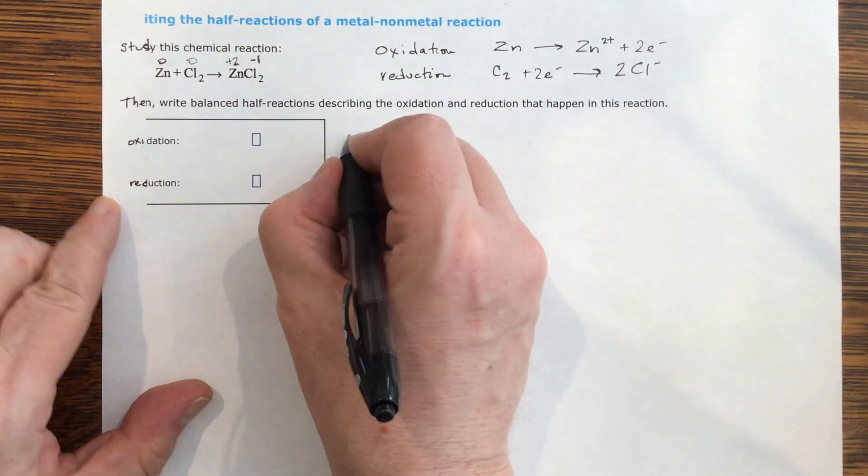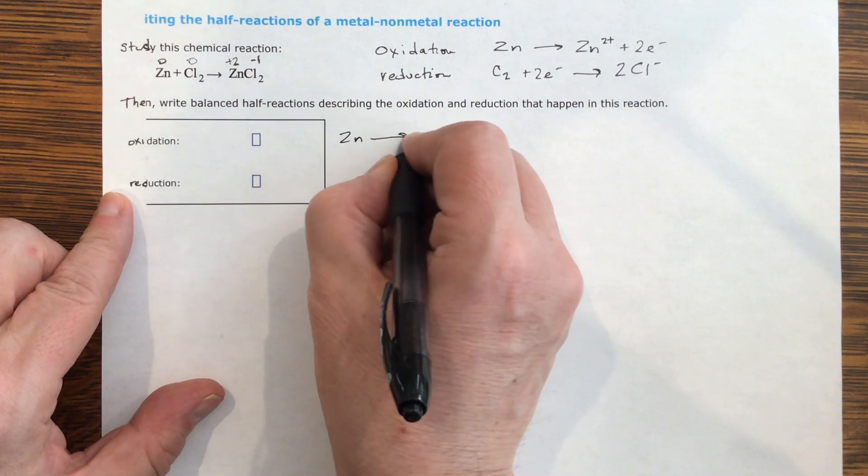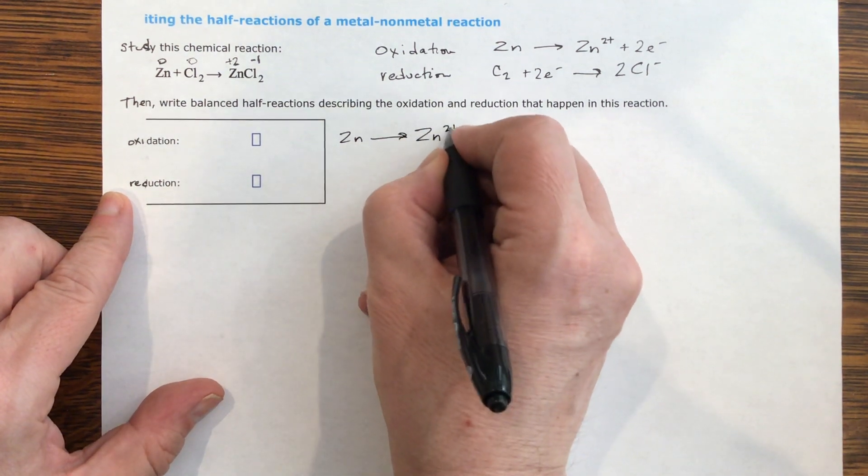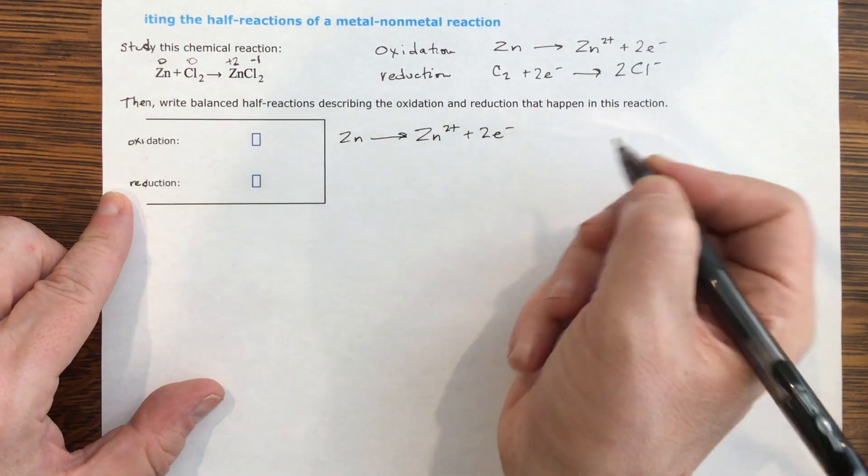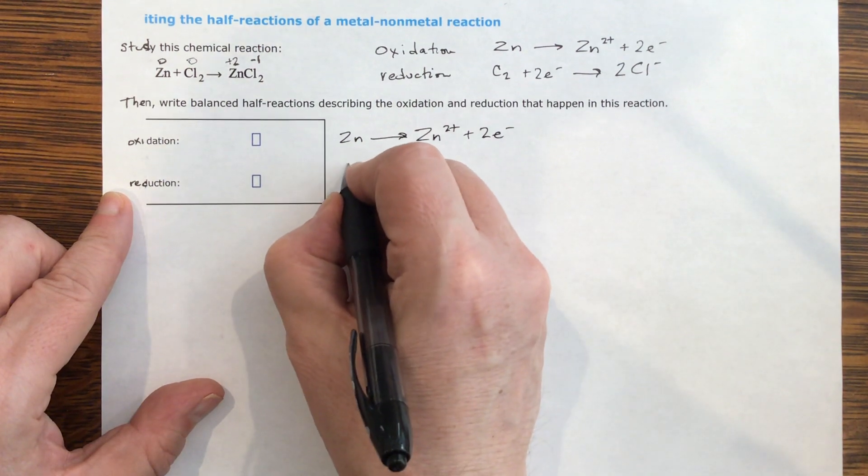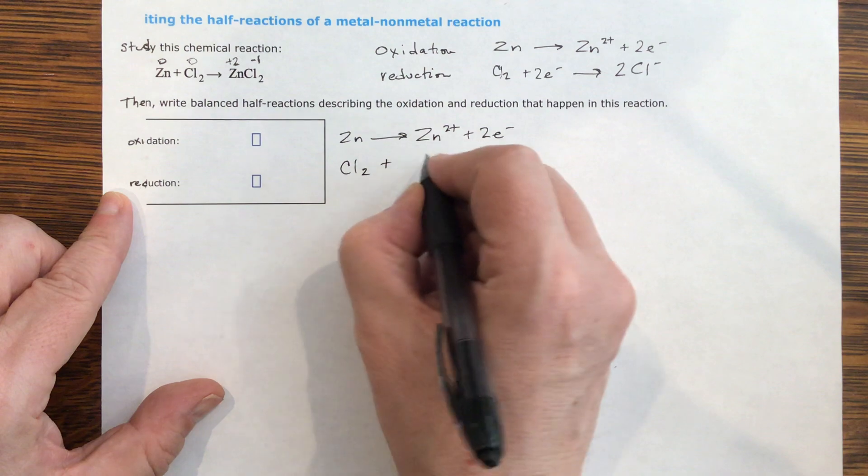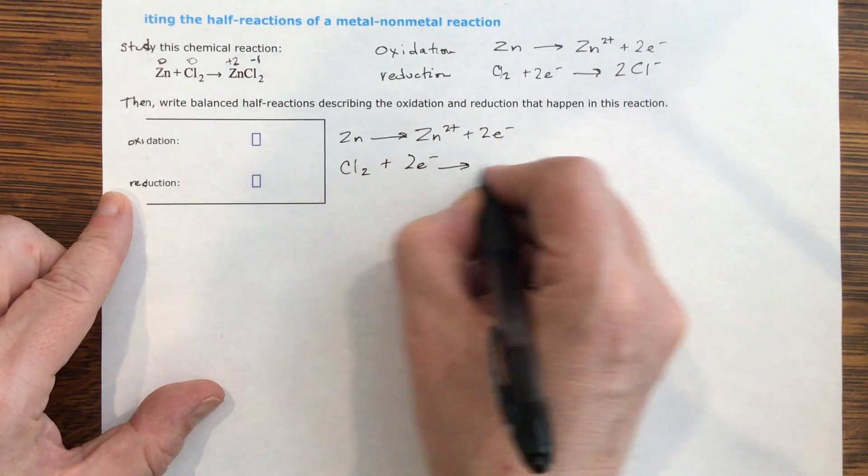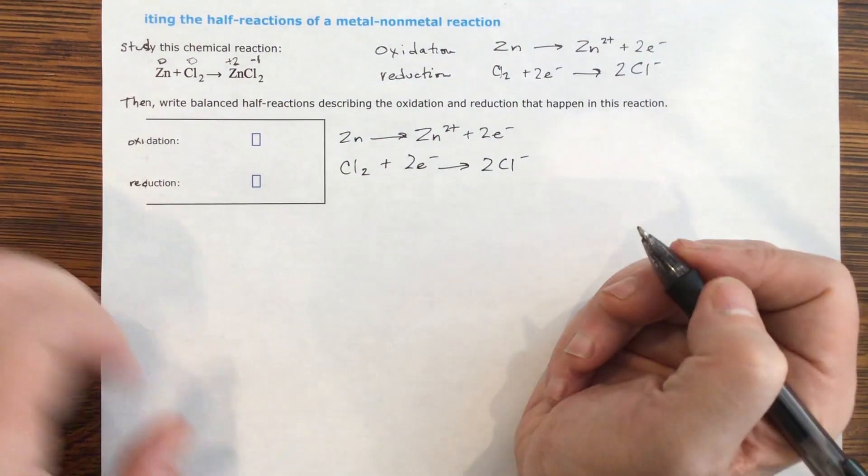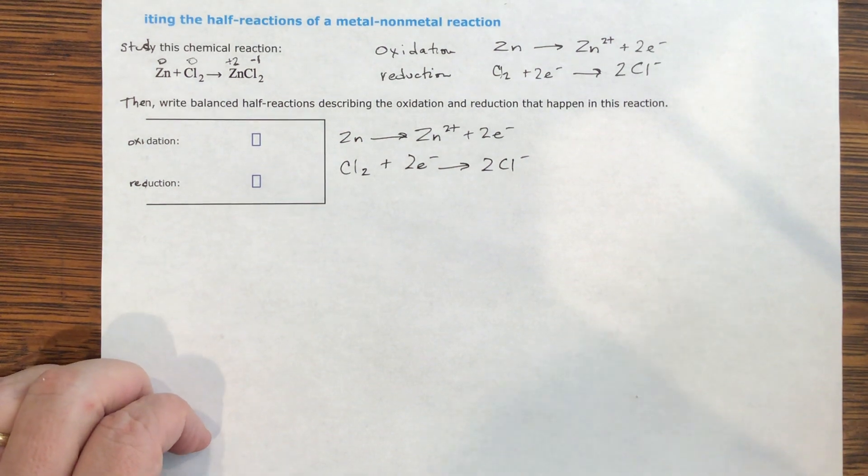Your oxidation is going to be Zn to Zn2+ plus two electrons. Your reduction is Cl2 plus two electrons yields two Cl-. I hope that helps.